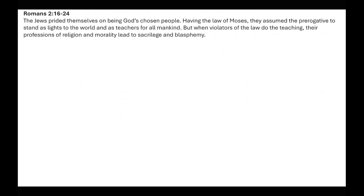Romans 2:16-24: the Jews prided themselves on being God's chosen people and having the law of Moses, assuming the prerogative to stand as lights and teachers for all mankind. But when violators of the law do the teaching, their profession of religion and morality leads to sacrilege and blasphemy. In other words, the Jews had become apostate, so their teachings were now blasphemous.